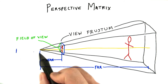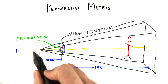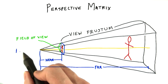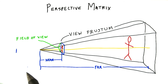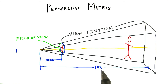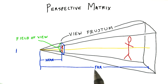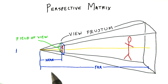You can see things would get weird if the near value, for example, was somewhere behind the camera. For orthographic projection, we can use whatever numbers we like for near and far, even negative values, since we're really selecting just a box in space. For perspective, we're doing something more elaborate with transforming space, so these values must be positive.